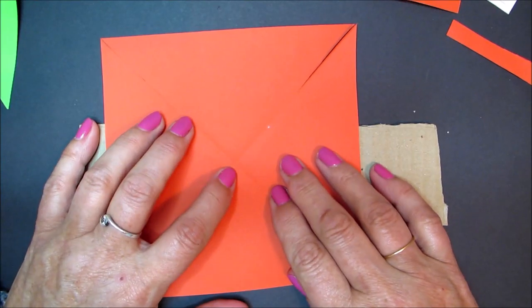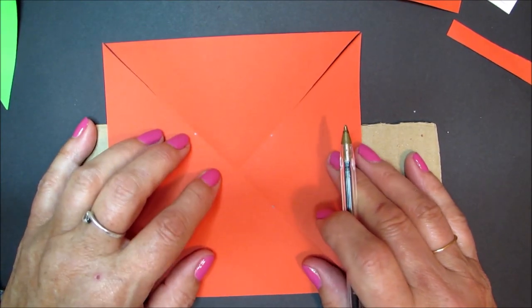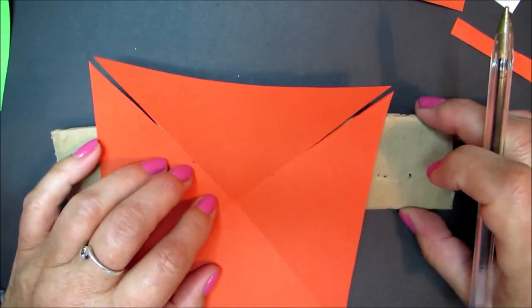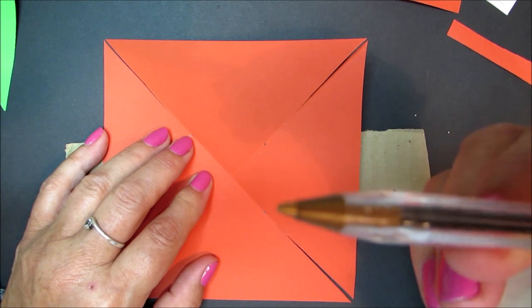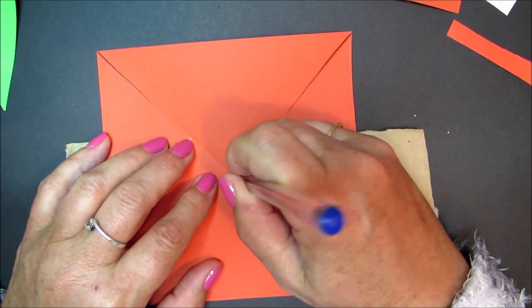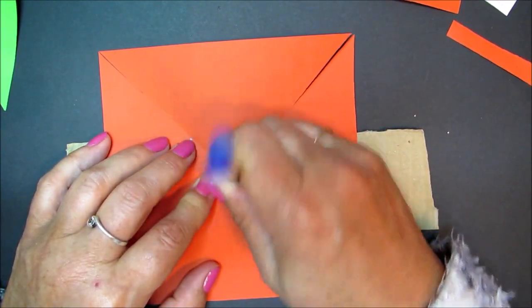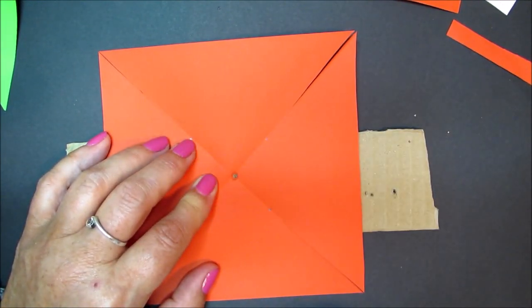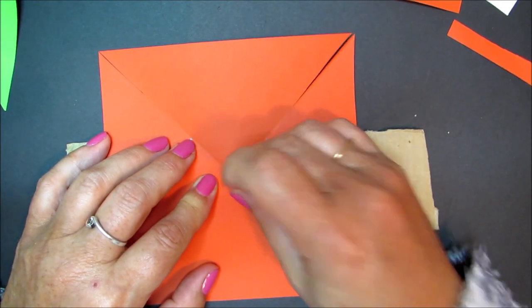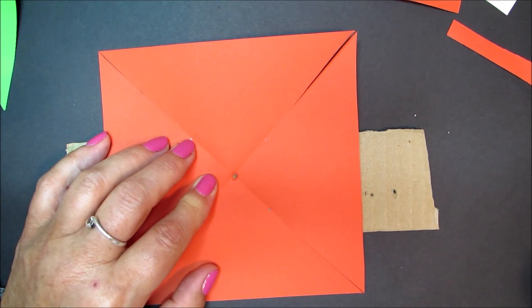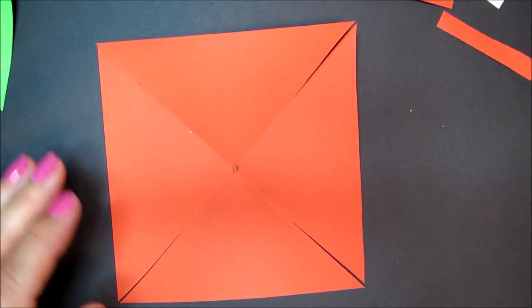And then we need to make a hole in the middle. This hole is going to be quite a large hole, so I'm going to put my corrugated card underneath. Take my hard nibbed pen and just push through. It needs to be a reasonable size because eventually this straw is going to fit through.